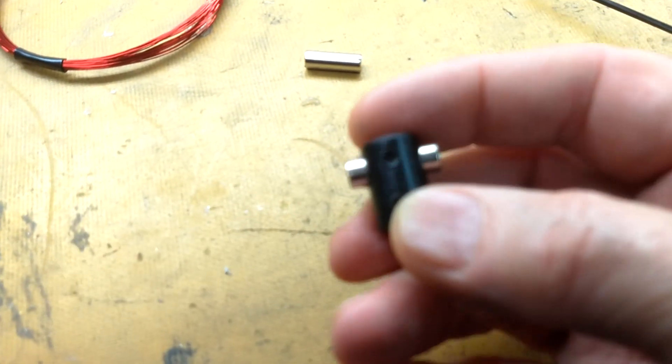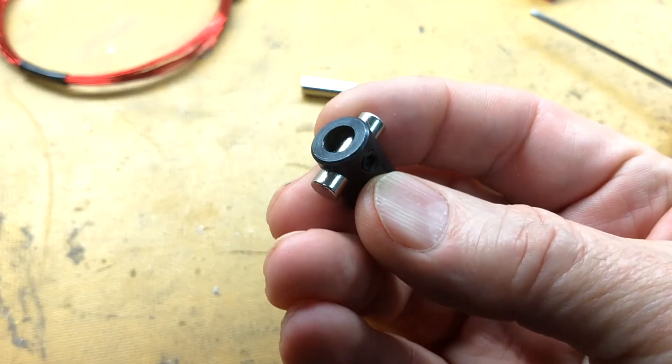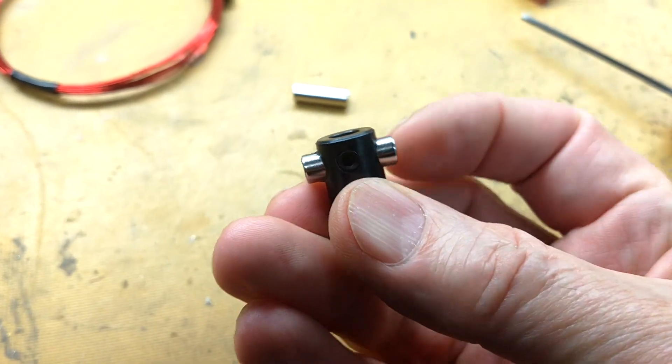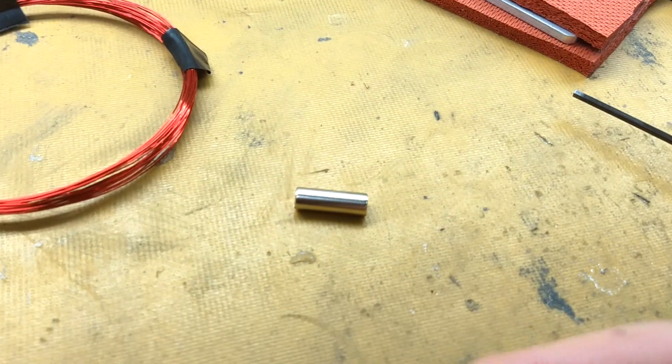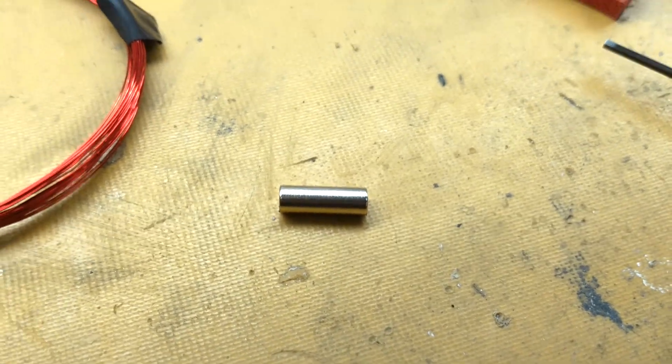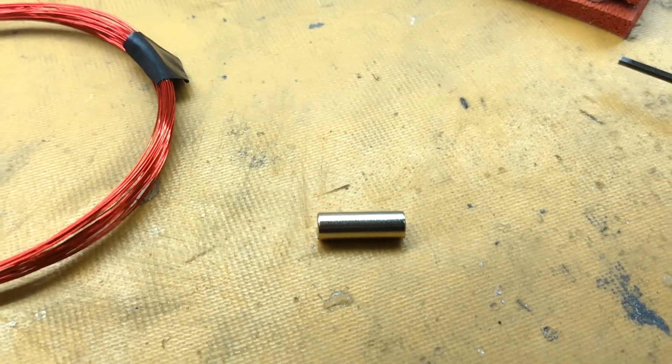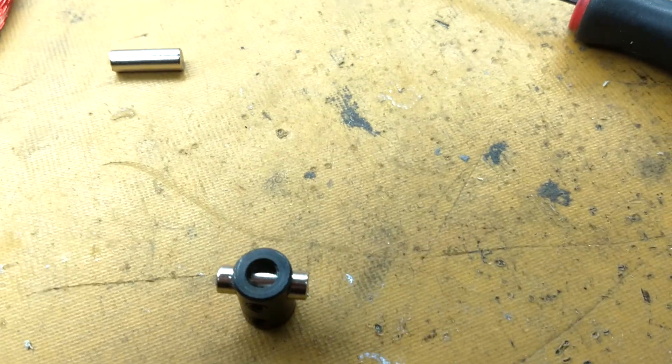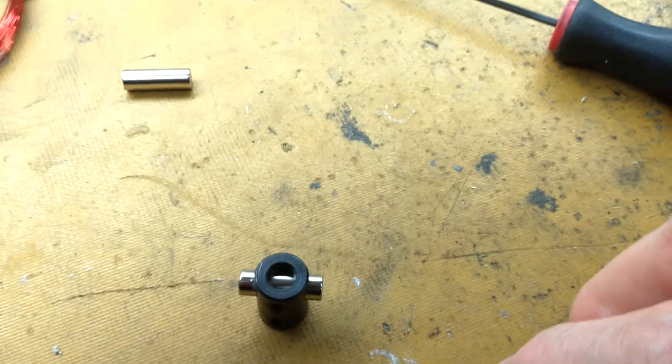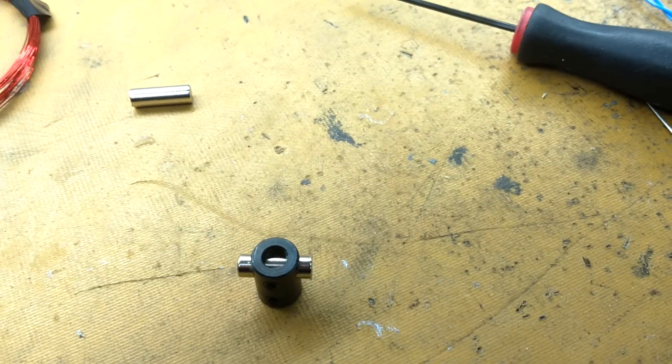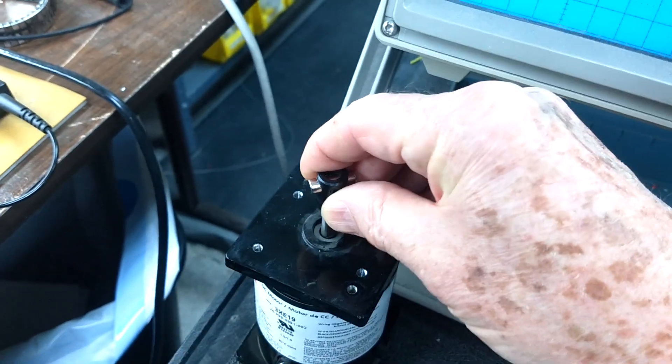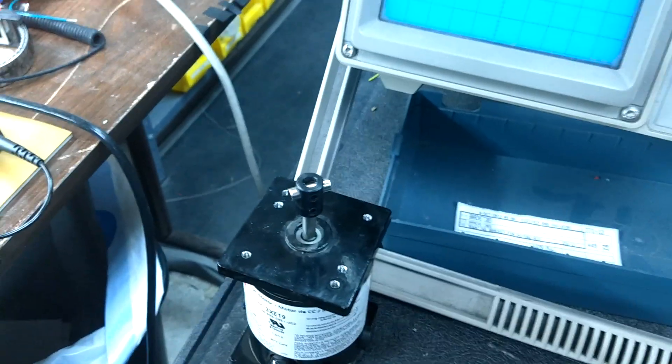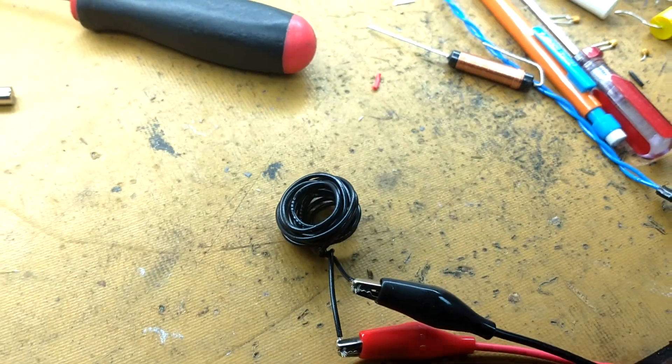Now, here's a shaft coupling that I've drilled and stuck a magnet through. And there's a similar, well, the same kind of magnet in the background for a size comparison. So I'm going to attach this to the shaft of the motor. And then we'll take it from there.